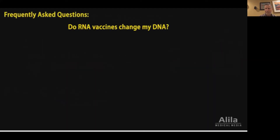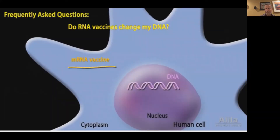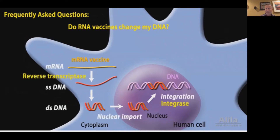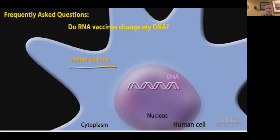RNA vaccines do not change your DNA. In order to do so, the mRNA would have to convert into DNA, enter the nucleus, and integrate into the cell's DNA. This is a complex, multi-step process requiring several enzymes that the cell does not have. Instead, the cell has plenty of enzymes that can readily destroy the mRNA, so the mRNA is usually degraded after the protein is made.